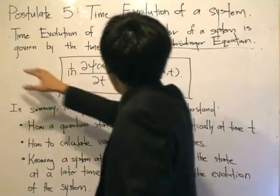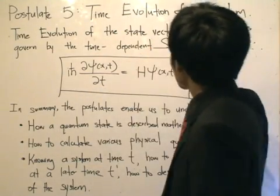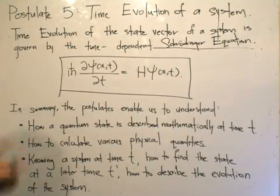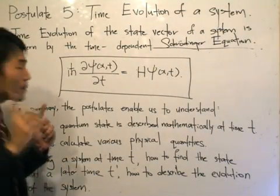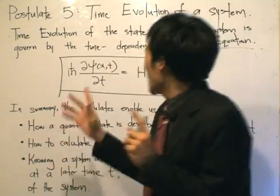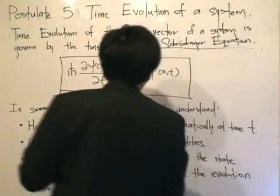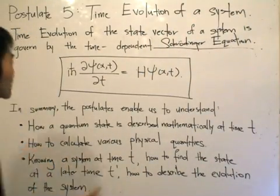We are given a state vector of a system, and then we're going to use the time-dependent Schrödinger equation to see how the state evolves. This equation, I must say, is not easy to solve. Because it's a partial differential equation, as you can see, the state vector ψ is written in terms of x and t, but we're taking the time partial derivative.